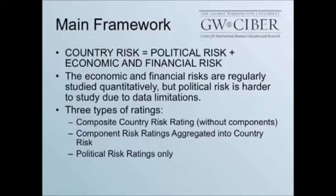The main outline of my talk considers three types of ratings. First, a composite country risk rating—essentially country risk encompassing political, financial, and economic risks without disaggregation into components. Second, a component risk rating analysis aggregated into country risk, starting with smaller building blocks and adding them up. Finally, some institutions and agencies that think about political risk ratings only—possibly to their detriment, because political risk is related to economic and financial risk.